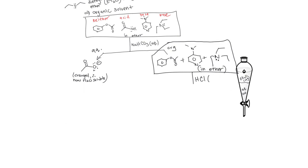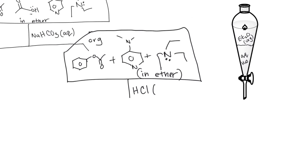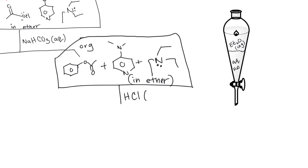So just to remind you what we're doing, those three are in the separatory funnel in the ether layer. It's a single layer once again. Looks like that when we add it. Then when you're going to add the HCl, aqueous HCl, you go back to having two layers again.